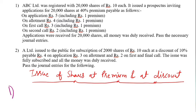For example, ABC Limited was registered with 20,000 shares of rupees 10 each — that is the par value. It issued a prospectus inviting applications for 20,000 shares at 40% premium, which means 10 multiplied by 40 upon 100 equals 4 rupees premium. Payment is: on application rupees 5, allotment rupees 4, first call rupees 3, second call rupees 2, including rupees 1 premium each.